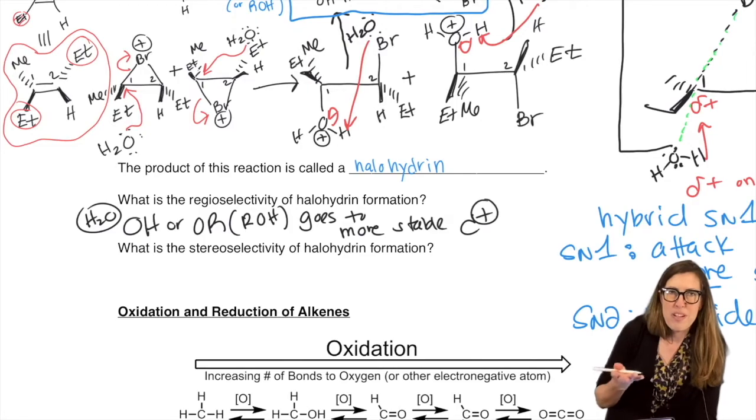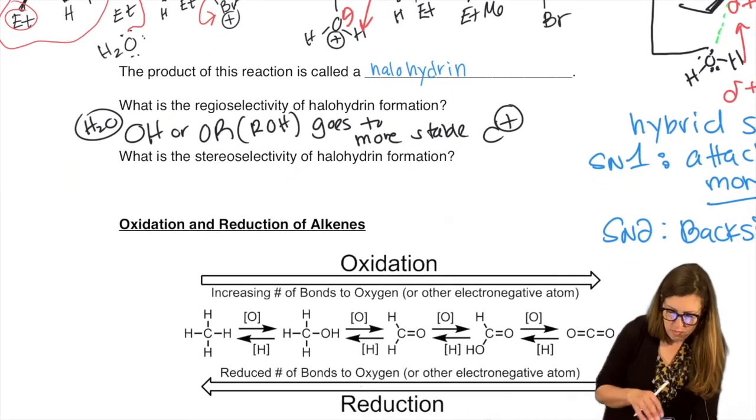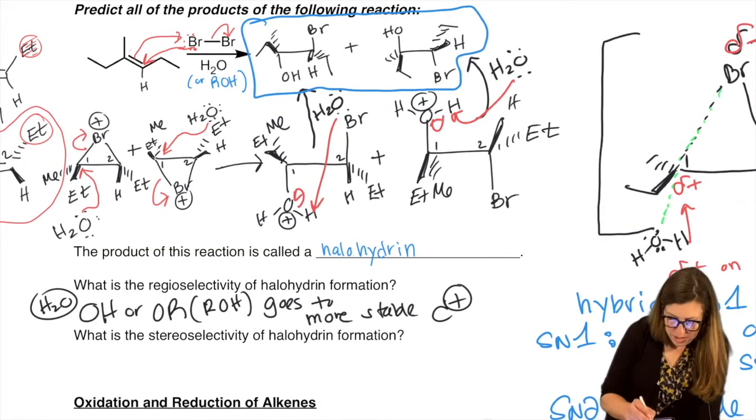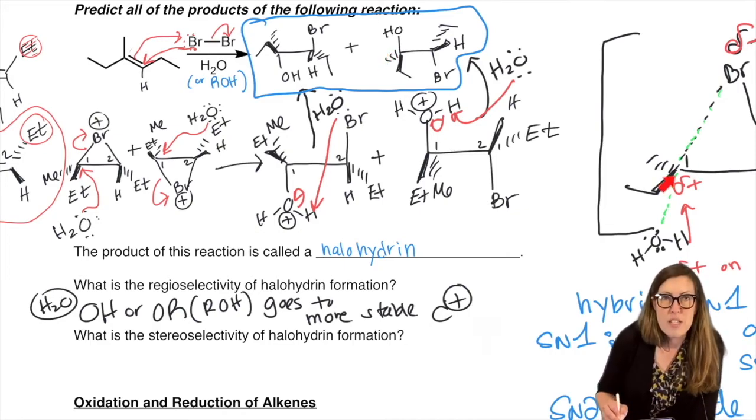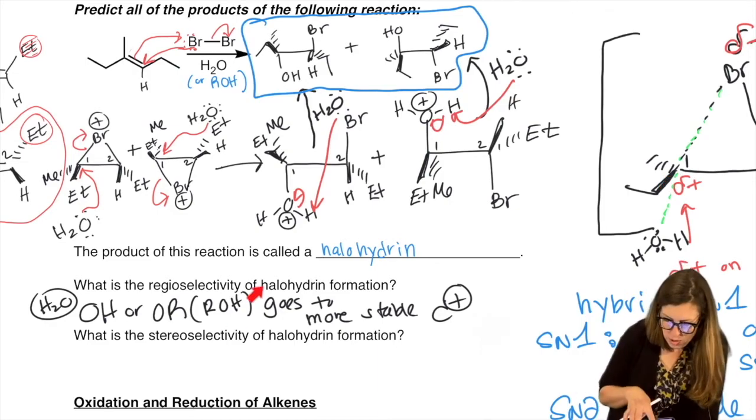So in other words, of the two carbons, OH never went to that carbon. It only went to the one that's more substituted because it would make a better carbocation, because it has this hybrid SN1-SN2 sort of transition state going on there.